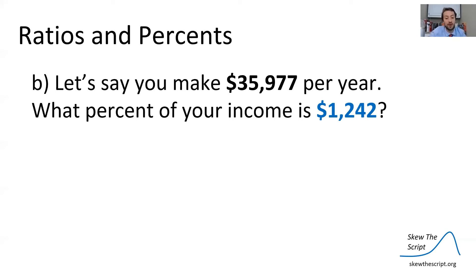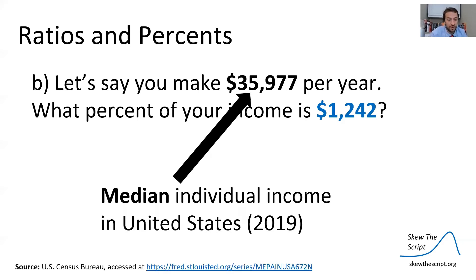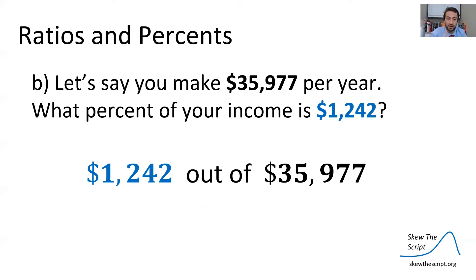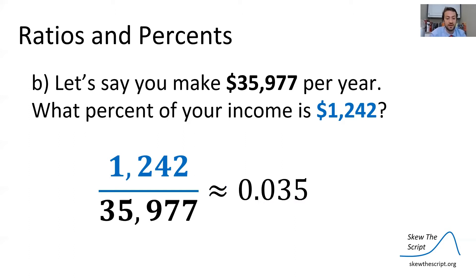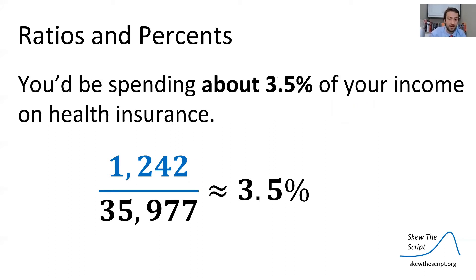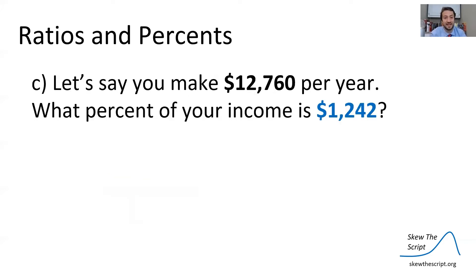However, let's say you make about $35,977 per year — that is the median individual income of the United States in 2019. Again, we take 1242 out of 35,977. This out of means we want a ratio, so we put 1242 over 35,977, divide, and get 0.035, which comes out to 3.5%. You'd be spending about 3.5% of your income on health insurance at this income level.